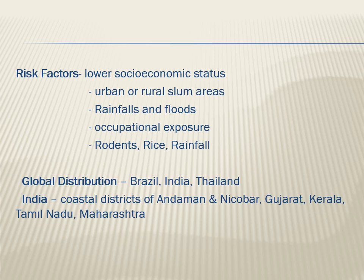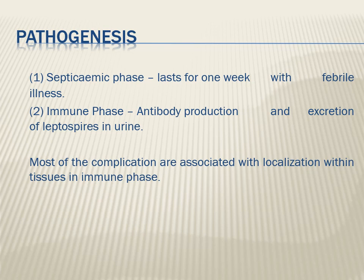Risk factors include occupational exposure such as veterinary work and rodent control, rodents themselves, rainfall, floods, and lower socioeconomic status in slum areas. Globally, leptospirosis is most commonly seen in Brazil, India, and Thailand. In India, maximum cases are seen in the coastal district of Andaman and Nicobar, followed by Gujarat, Kerala, Tamil Nadu, and Maharashtra.